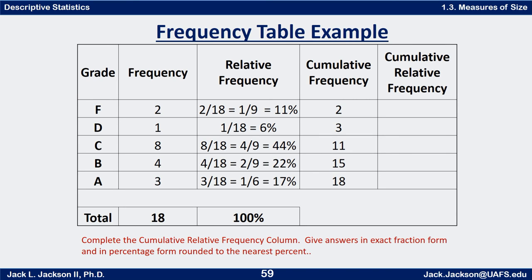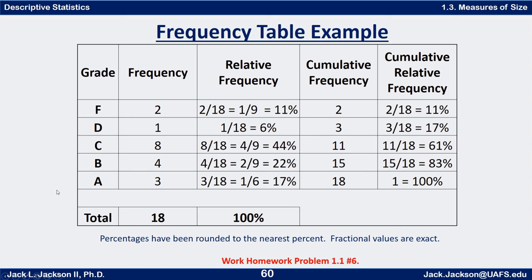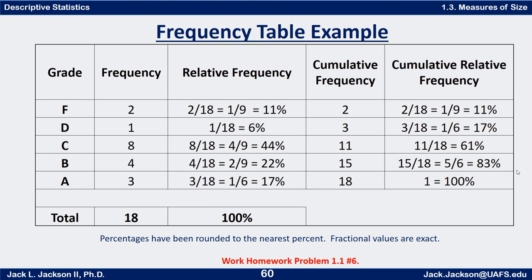Now go ahead and give the cumulative relative frequencies too. Press pause. All you have to do is take those cumulative frequencies and divide all of them by eighteen: two eighteenths, three eighteenths, eleven eighteenths, fifteen eighteenths. Some of these reduce. Two eighteenths reduces to one ninth — eleven percent. Three eighteenths reduces to one sixth — seventeen percent. Eleven eighteenths doesn't reduce — sixty-one percent. Fifteen eighteenths reduces to five sixths — eighty-three percent. And eighteen eighteenths is just one — one hundred percent. This last one is always going to be one hundred percent, and the fractional values are exact while the percentage forms are approximations.